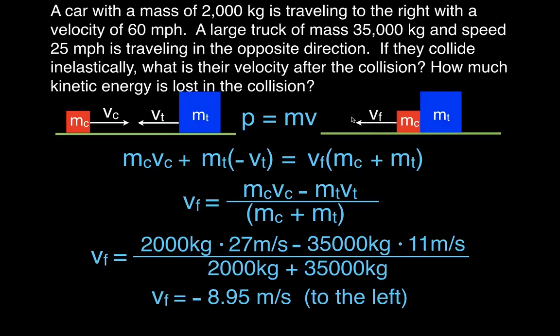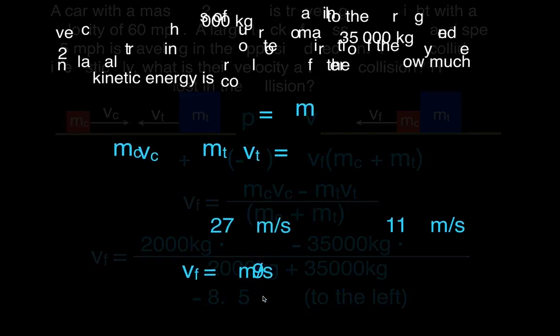The negative sign means the velocity is to the left. The momentum of the truck is much greater than the momentum of the car, so after the collision the truck's greater momentum pushes the car backwards, and both objects end up traveling to the left at a final velocity of −8.9 meters per second.